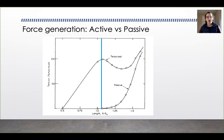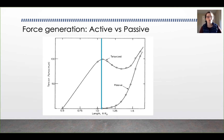Muscles generate force both actively and passively. Actively is when you're doing a muscle contraction — for example, a biceps curl. Muscles can also generate force passively when they're lengthened; for example, when someone takes your arm and pushes it down, the force generated as they passively stretch your muscle is passive force generation. However, muscles are much better at producing force actively than passively, as shown in this graph.